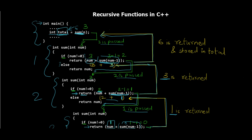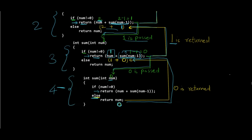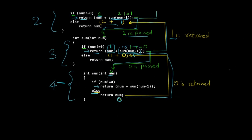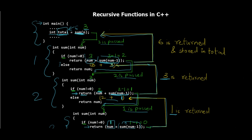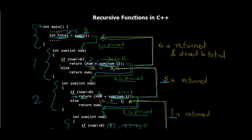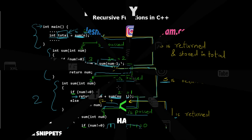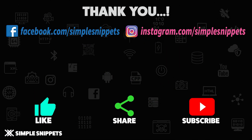Now the idea should be very clear about how recursion works. If we had entered four, there would have been one more iteration. The key idea is that it's a repetitive process — the functions go deeper and deeper depending on the number of iterations, and then return values back up to the topmost function call. That's how recursive functions work.